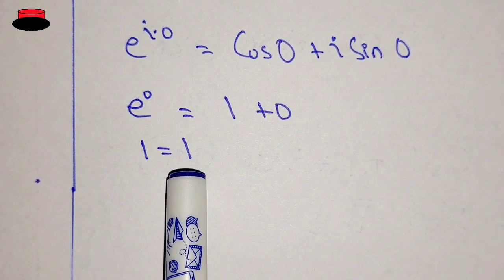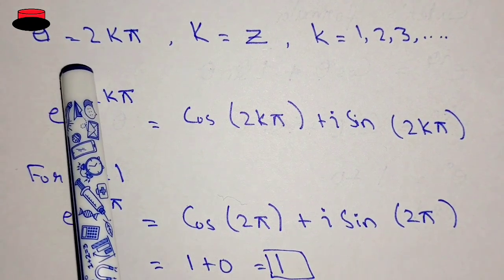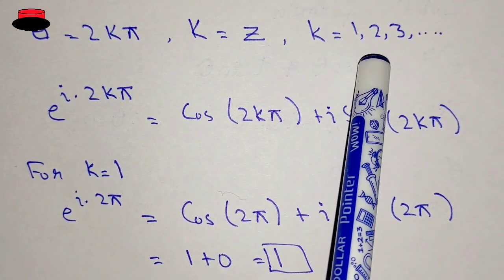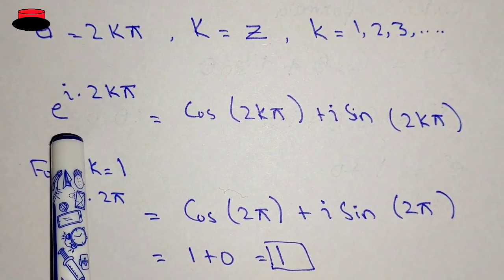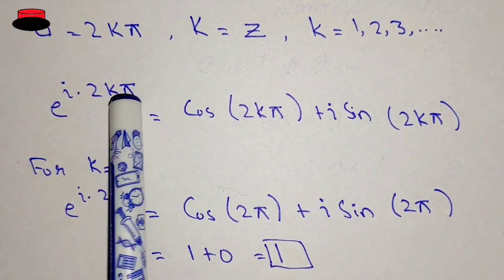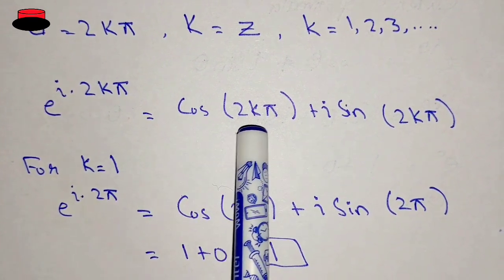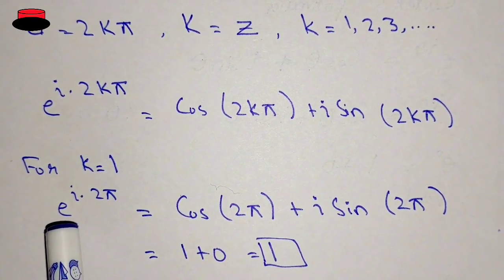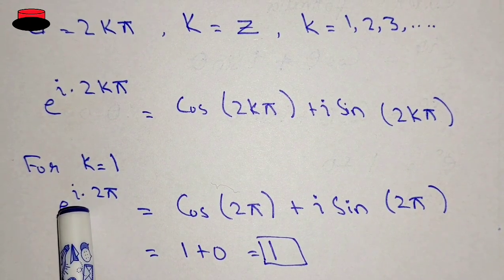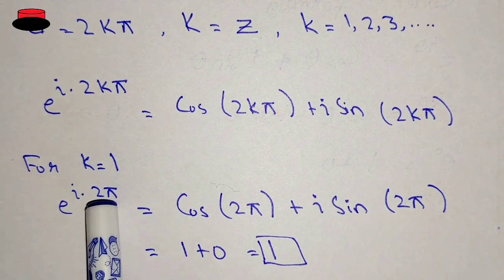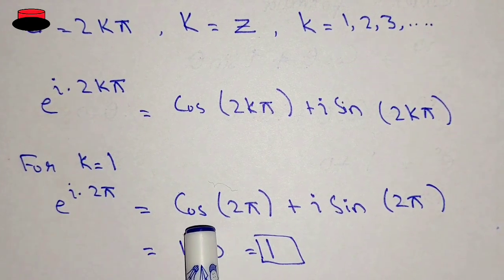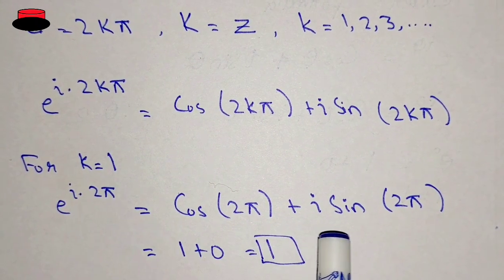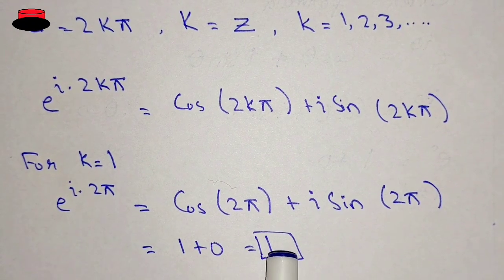This means there must be a complex solution. Now we will put θ equal to 2kπ, where k is an integer and k may be 1, 2, 3 and so on. So e^(i·2kπ) equals cos(2kπ) plus i·sin(2kπ). Putting k equal to 1, e^(i·2π) equals cos(2π) plus i·sin(2π), which gives 1 plus 0 equal to 1.